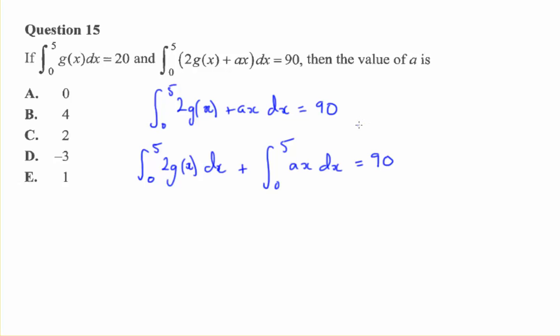What else can we do? Well these quantities out the front, these coefficients can go right out the front of our integrals provided they're constants. So I'm assuming a is some constant value not associated with x. So let's take those values out. We get 2 out the front here and we get a out the front here and that all equals 90.